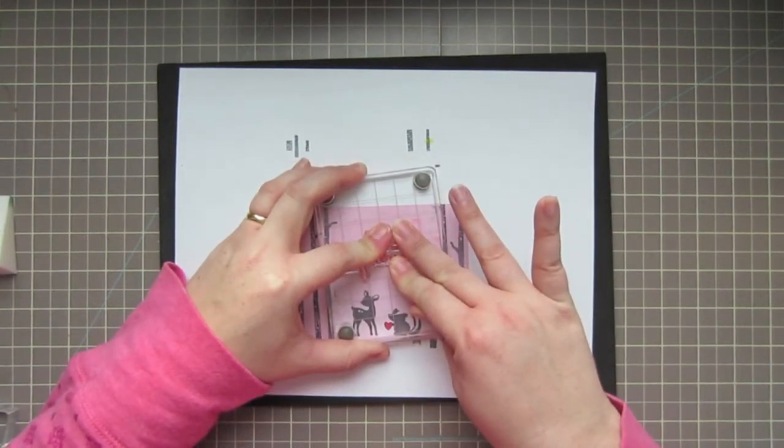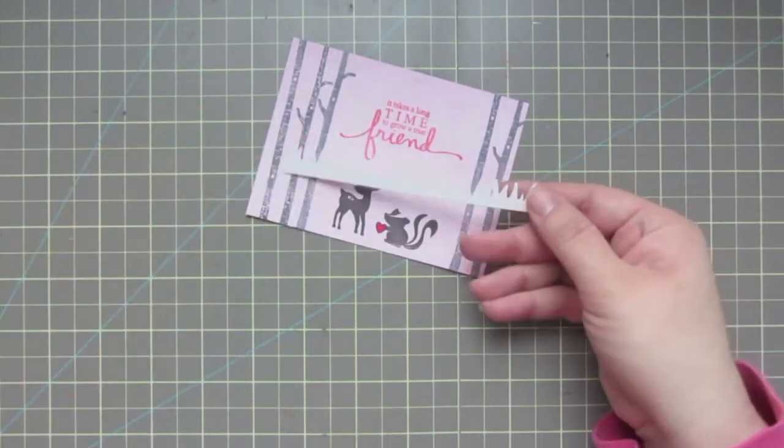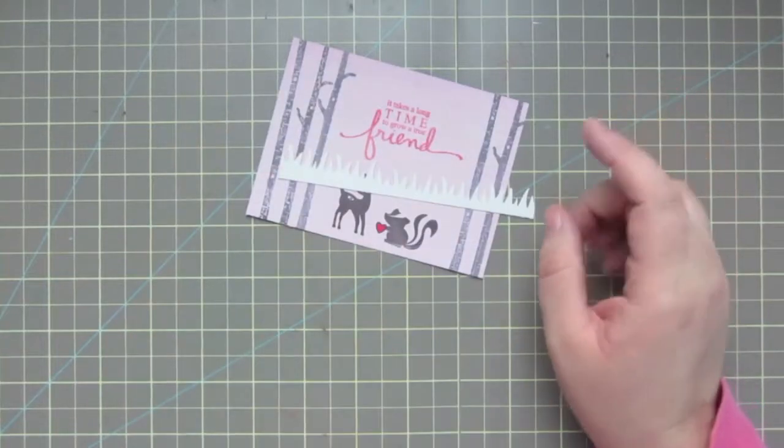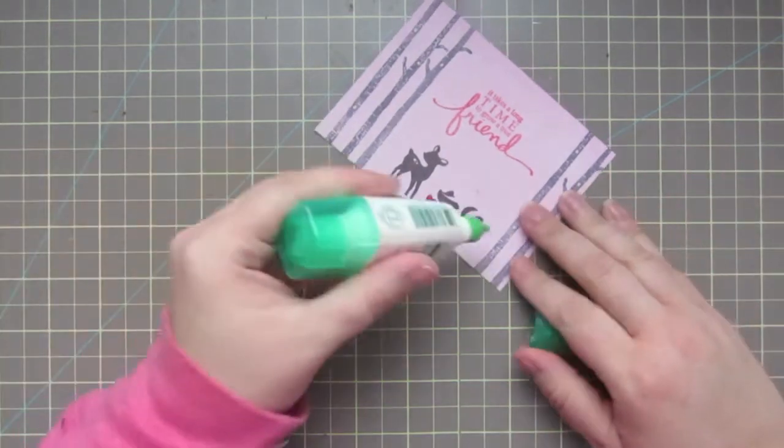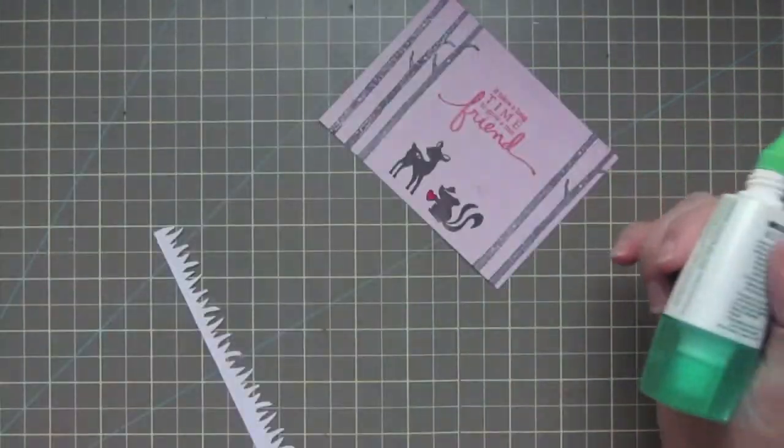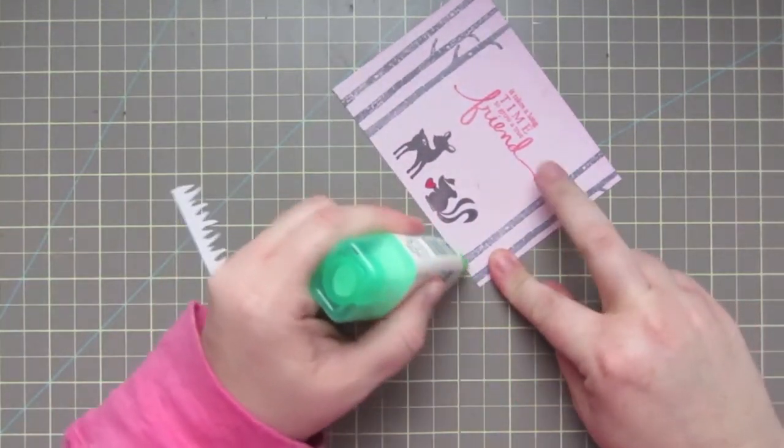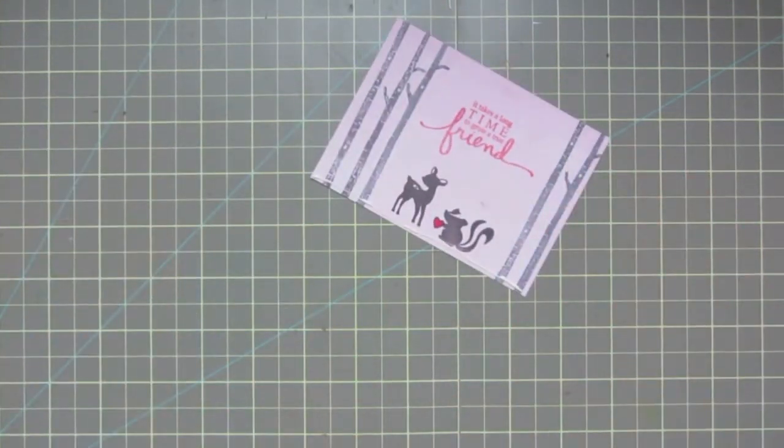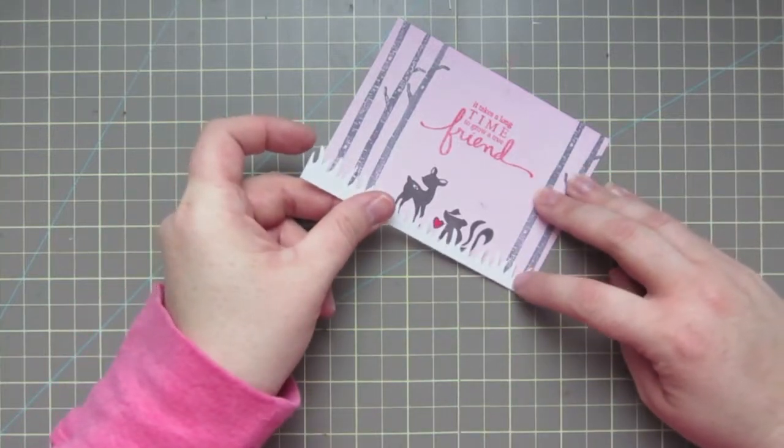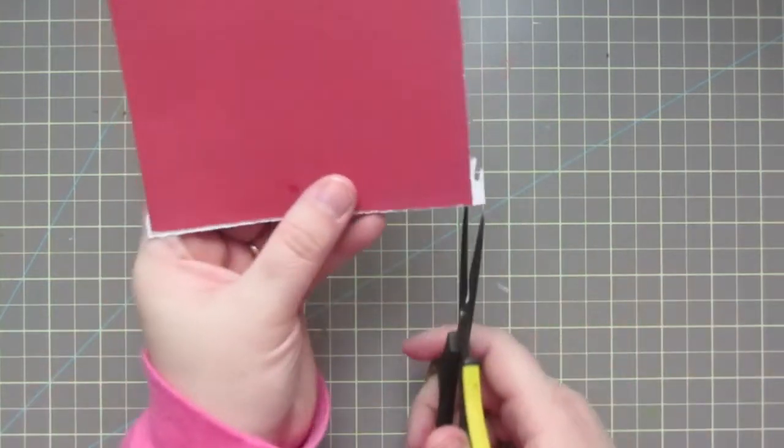Now I've punched out a little strip of grass with the Fiskars grass punch, and I'm going to adhere that down to the card. That pattern paper is also from the Devoted pad by Carta Bella. I'm just going to add a tiny bit of Tombo Mono to the bottom, adhere that in place, then flip it over and trim off the excess.